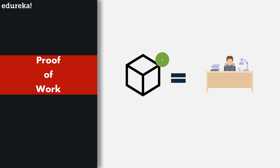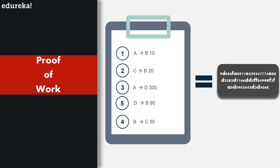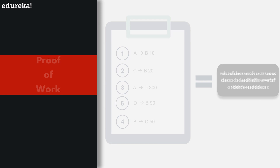Think back to the distributed ledger situation — everyone is broadcasting transactions and we want a way to agree on what block is correct. The core idea behind the original Bitcoin paper is to have everyone trust whichever ledger has the most work put into it. A block is only considered valid if it has a proof of work. If you change any transaction or even the order of transactions, the complete hash changes drastically, telling everyone the proof of work is wrong — you can compare it with other copies on the network, and this is how you reach consensus that a block is not valid.